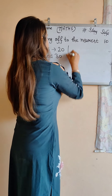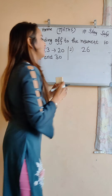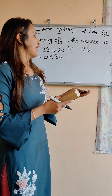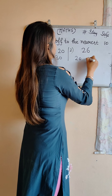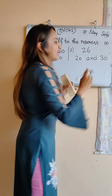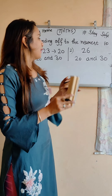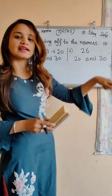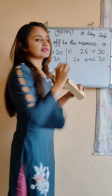Let us take one more example. In this case we have 26. We will find that 26 lies between 20 and 30. But in this case, 26 is more closer to 30, so our answer is 30.